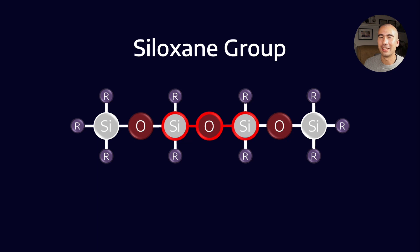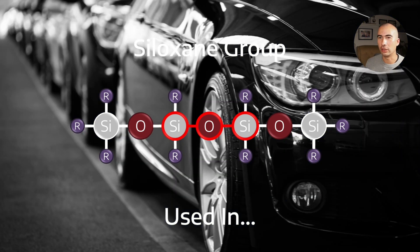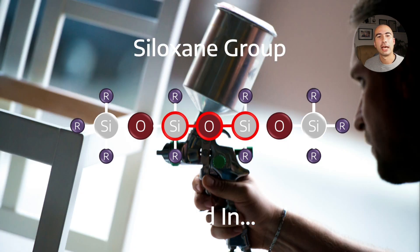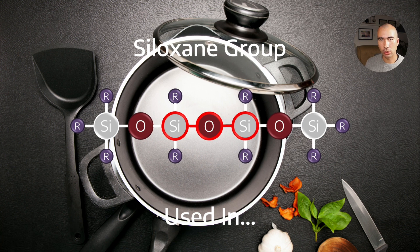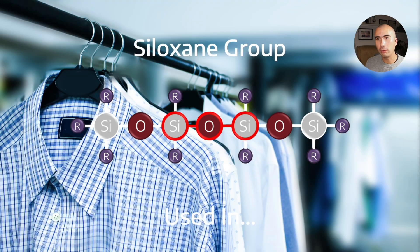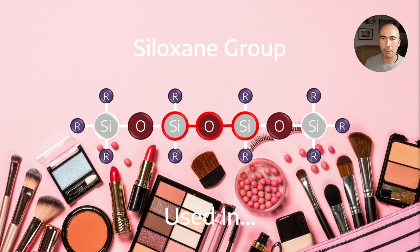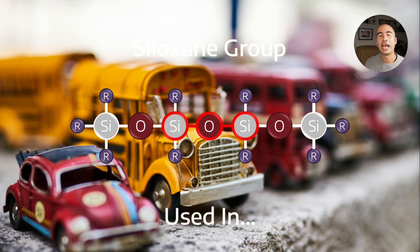The thing about siloxanes is that they are used in many, many different applications. So they're used in things like the automotive sector, the aerospace sector, construction, adhesives and paints, cooking materials, defoamants. They're used in dry cleaning industry. They're used in electronics. They're used in jewelry. They're used in makeup. They're used in personal care and they're used in toys.